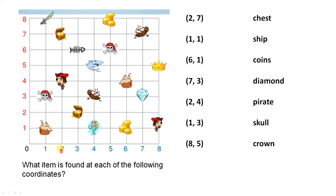Two, four. There's two and there's four - the pirate. One, three. There's one and there's three - the skull. And eight, five. Eight, five is the crown.